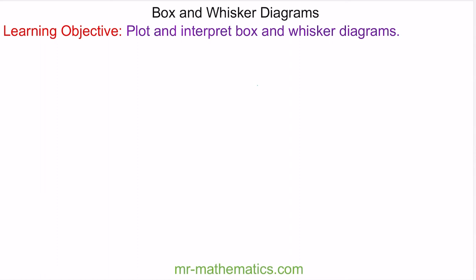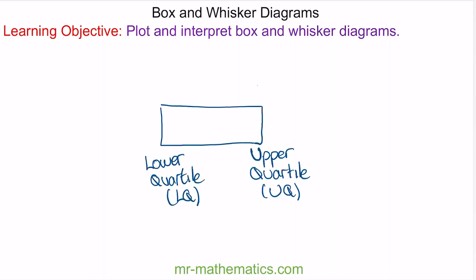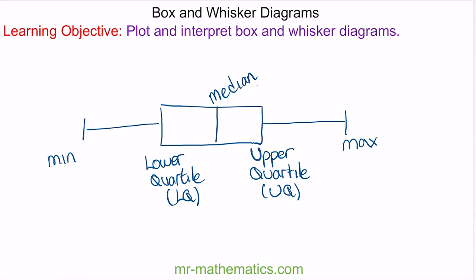A box plot looks like this. We have our box, which is formed from the lower and the upper quartiles. The whiskers are formed by the maximum and the minimum data values. And within our box we have the median average. A box plot is particularly useful because it shows us the interquartile range, which is the width of our box, between the two quartiles.